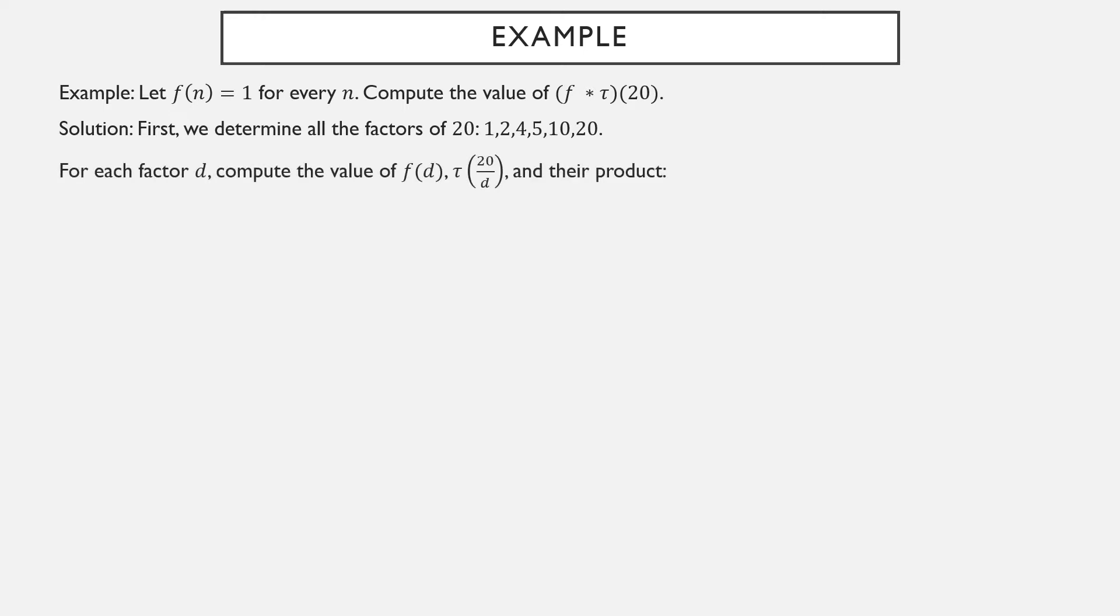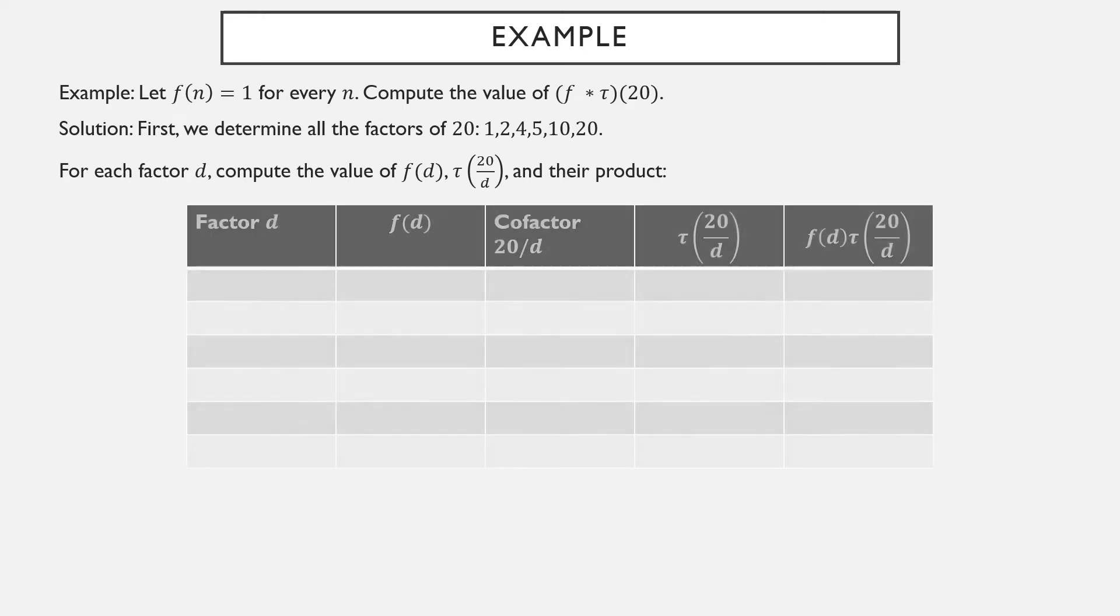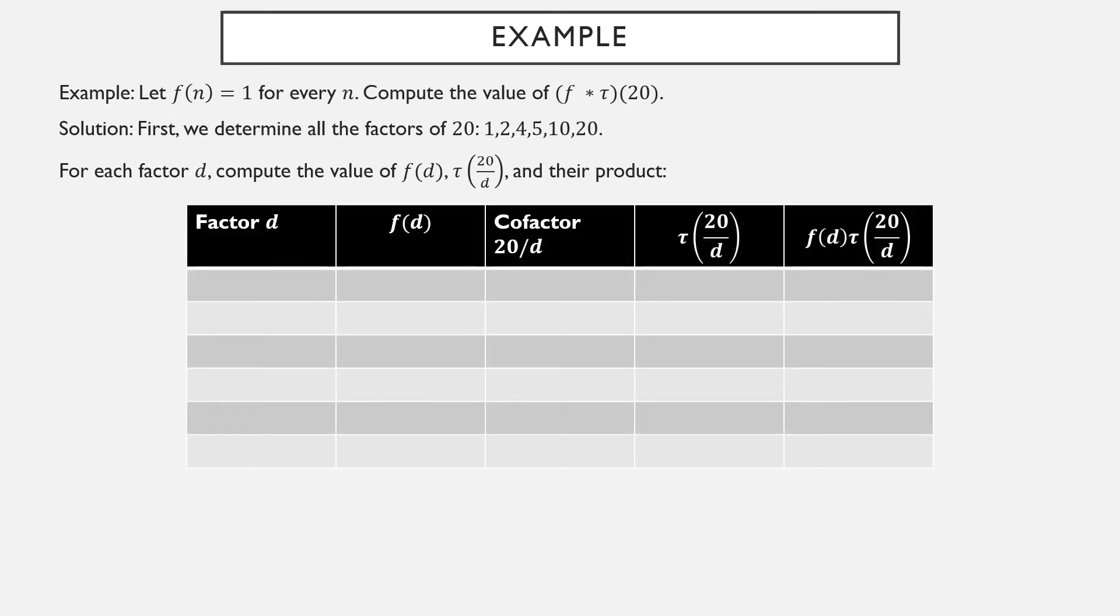Let's take a look at another example. f(n) is 1 for every n. Compute the value f star tau of 20, where tau is the number of positive divisors function. So we determine all the positive factors of 20, and there they are: 1, 2, 4, 5, 10, 20. For each factor, we compute the value of several different things: f of the factor, tau of the cofactor, and then the product f(d) times tau(20/d). So let's go ahead and fill in this table here.